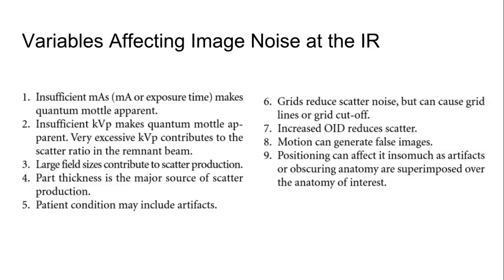A large field size, as we mentioned earlier, is going to create more scatter because you have more scatter that's diverging. When you cut off some of that divergence, you're getting more of the photons that are traveling in straighter lines. So scatter, when you think about it, is kind of out towards the sides of your image. Part thickness, we said earlier, is really the major source of scatter. And patient condition, such as any snaps or foreign bodies that you're not looking for, per se, can create artifacts.